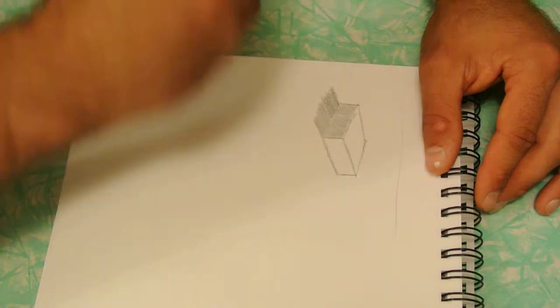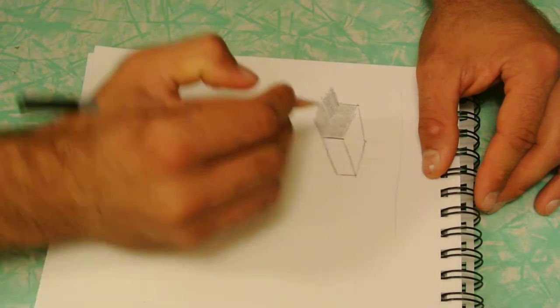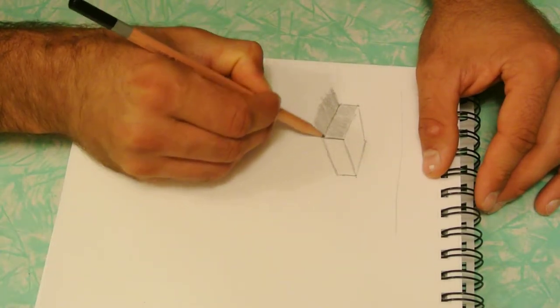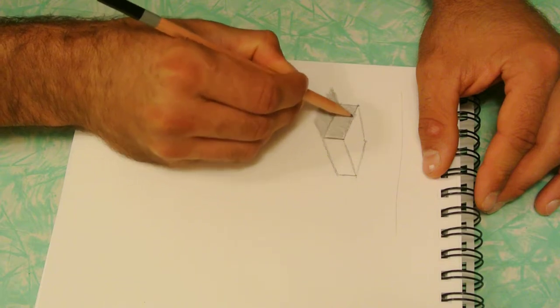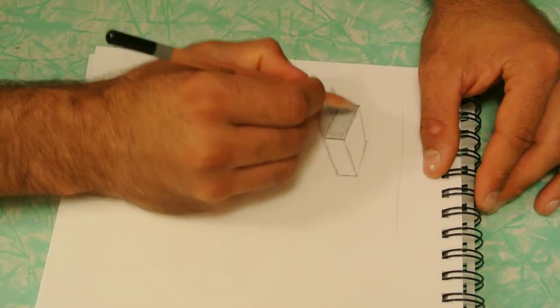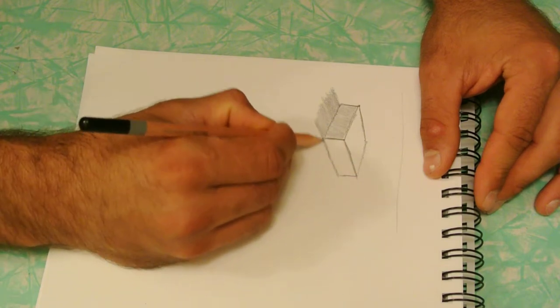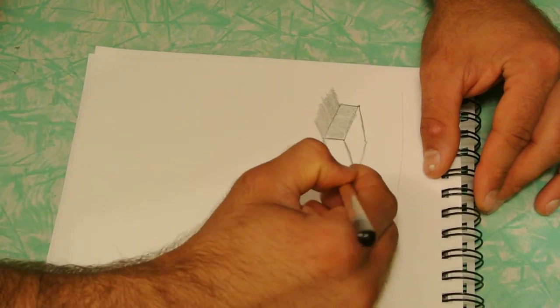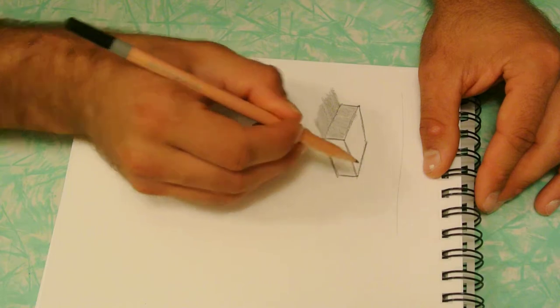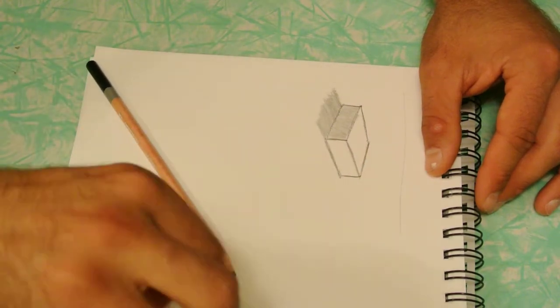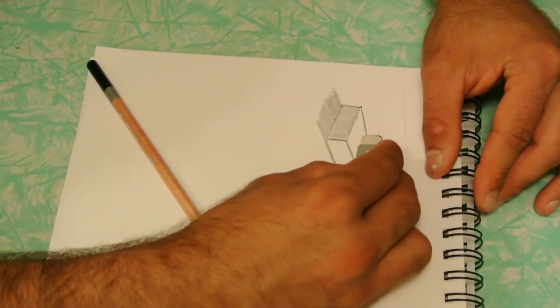Alright, now go back and touch your lines up. Now you can erase any little mistakes you have. So I've got a little mark over here. Clean that up.